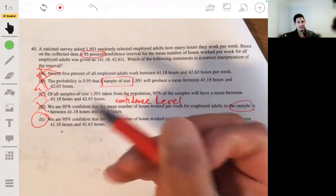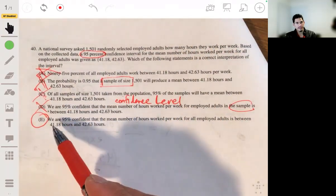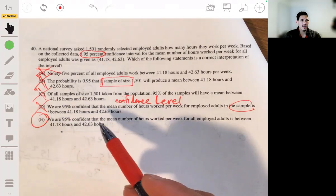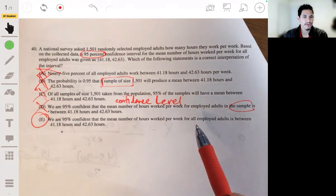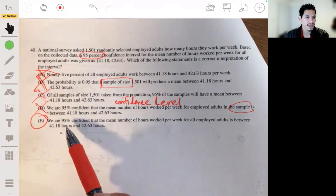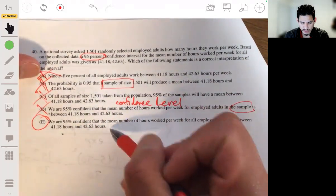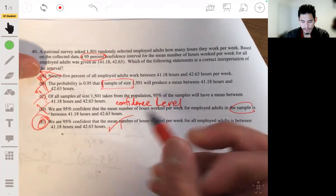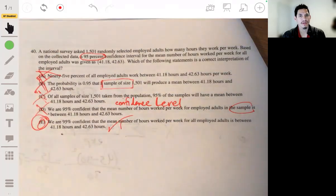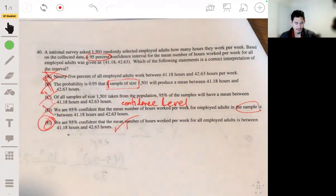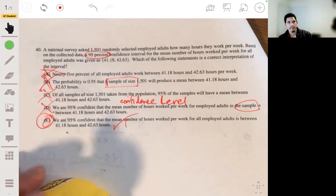And by process of elimination, it's going to be E, but let's just read it through. We are 95% confident that the mean number of hours worked per week for all employed adults is between 41.18 hours and 42.63 hours. That sounds good. And it is good. All right. There we go. Multiple choice section done. Congrats. Good luck. I hope that helps. And take a break and then move on to free response. See you later.